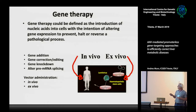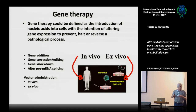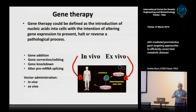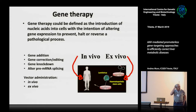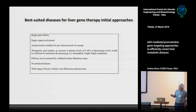We have mainly two different approaches. We can do in vivo gene therapy, where we infuse the gene therapy product directly into the patient. Or we can take cells from the patient, modify them in the laboratory, select the corrected cells, and re-infuse them. This is normally done for hematopoietic cells.